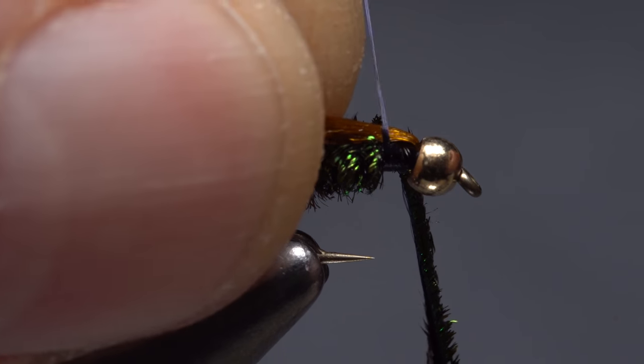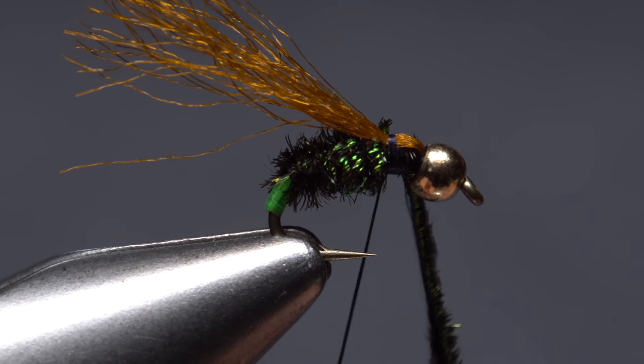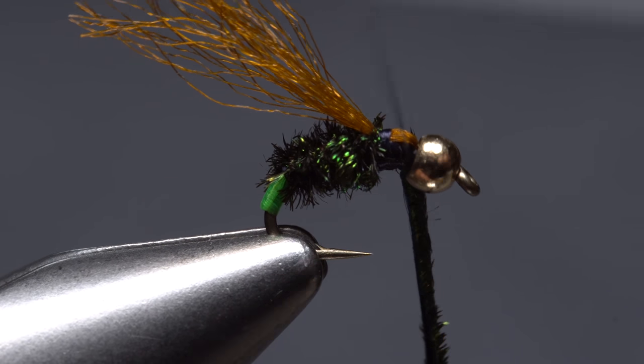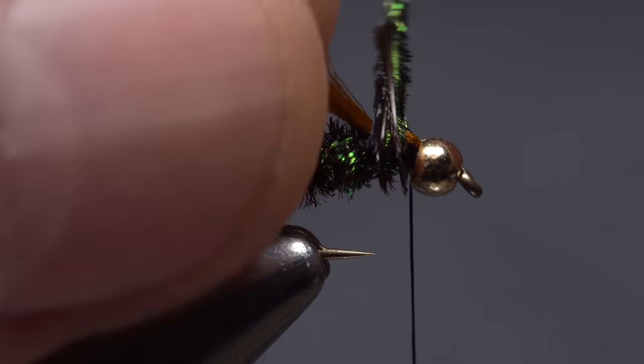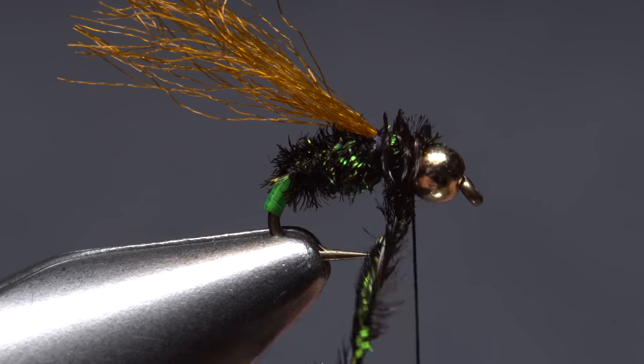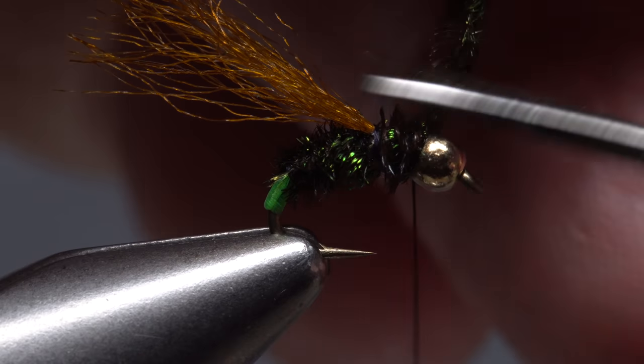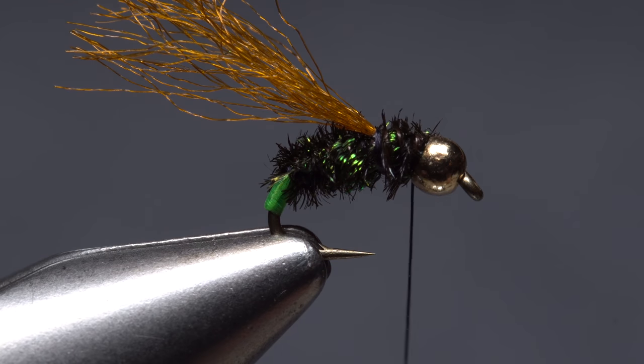Pull back on the antron yarn and anchor it right where the peacock wraps stopped. Then relocate your thread to behind the bead. Continue taking forward wraps with the twisted peacock rope before anchoring it with wraps of tying thread at the back edge of the bead. You can then snip the excess off close.